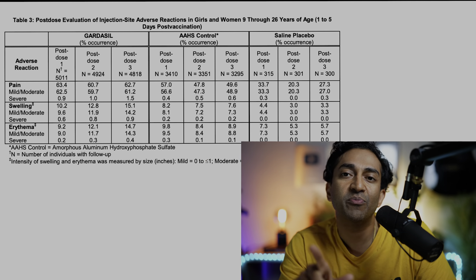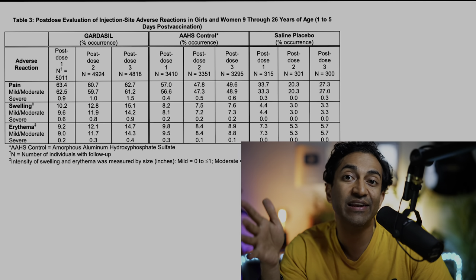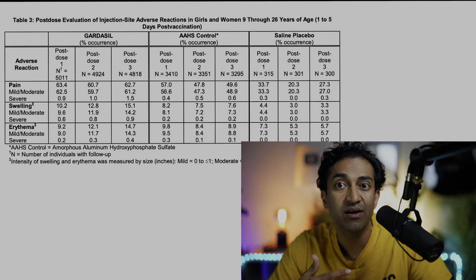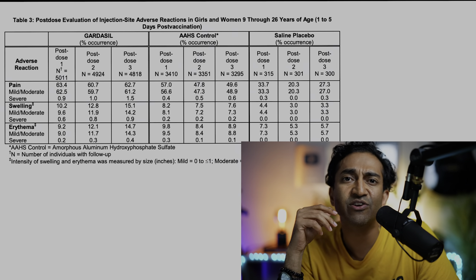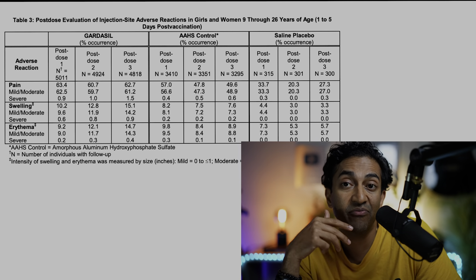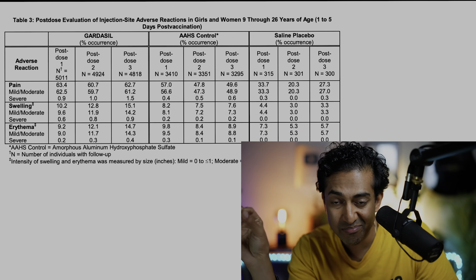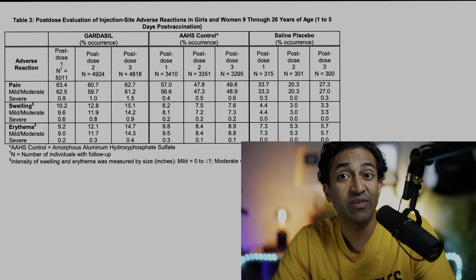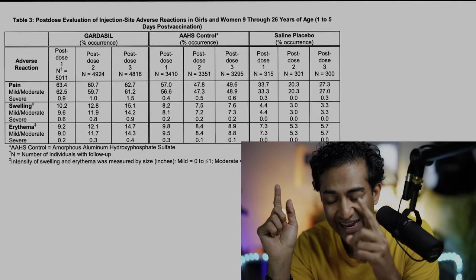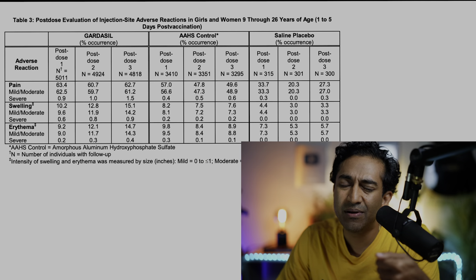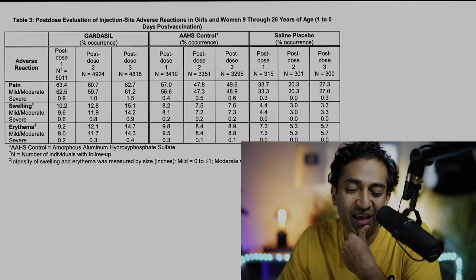If you want to say the short-term side effect profile is obscured by an active control arm in vaccine studies, sure — and with a saline arm we'd have a better understanding of pain, swelling, and erythema. But if you want to say a saline control arm would find things like autism, you've got a power problem. I'm not really persuaded by that particular point about the active placebo obscuring long-term safety signals. Even saline-controlled trials wouldn't have the power to detect those rare events.